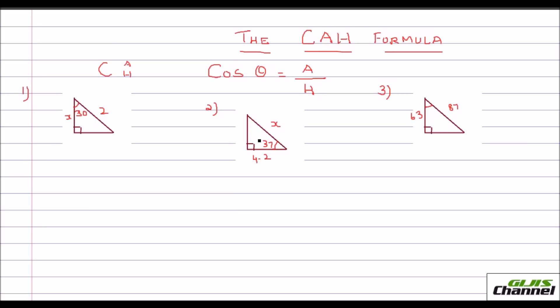The CAH formula simply outlines the fact that the cosine is equal to the length of the adjacent side over the hypotenuse side. This we have already discussed.